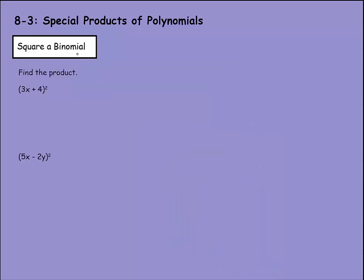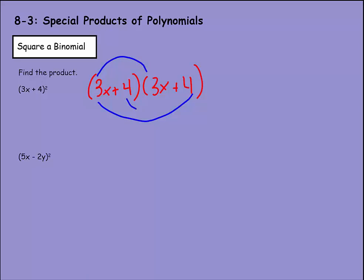Let's square a few more binomials. We have (3x + 4) squared, which written out is (3x + 4) times (3x + 4). Using the FOIL system, we have the front, the outside, the inside, and then the back.